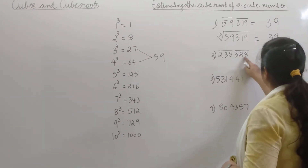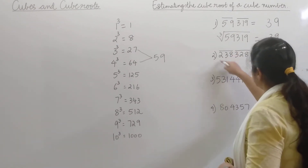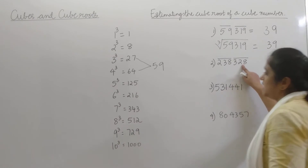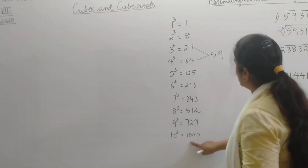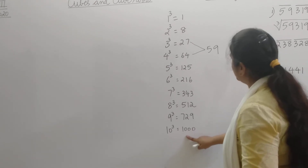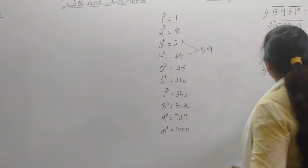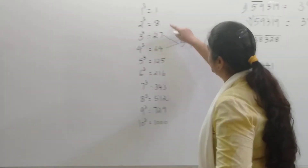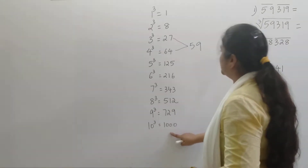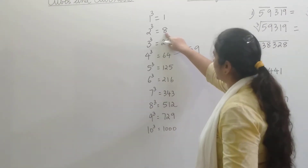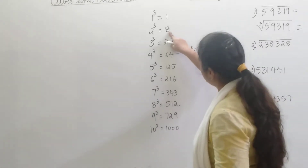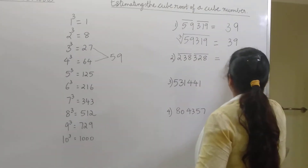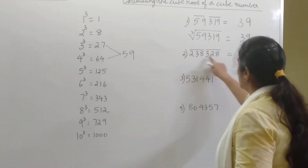So 328 makes the first group and 238 makes the second group. Take out the first group 328 and look at the cube numbers. We need to find that cube number which ends with a digit 8, because 328 ends with 8. That number is 8 itself. The number against 8 is 2, so 2 forms the units digit of the cube root of this number.